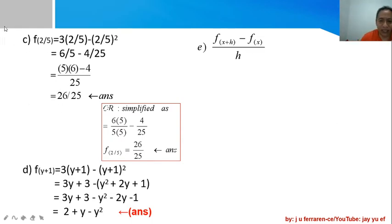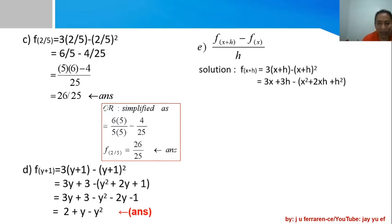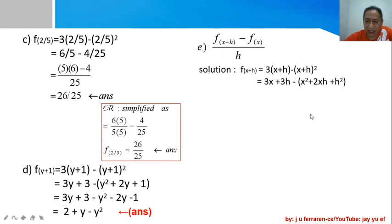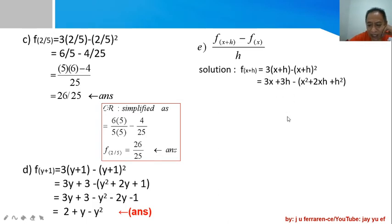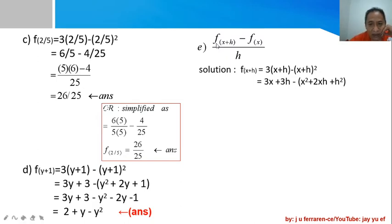For the last part, we have a ratio involving f(x + Δx). You may choose to solve the numerator first and then combine. f(x + Δx): substitute (x + Δx) for x, giving 3(x + Δx) - (x + Δx)². Distributing gives 3x + 3Δx, and expanding the binomial square gives x² + 2x·Δx + Δx².